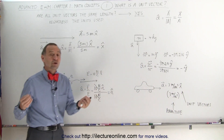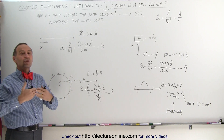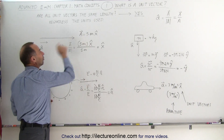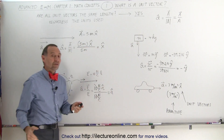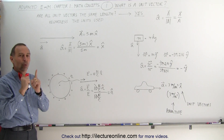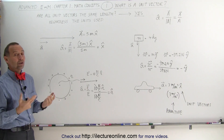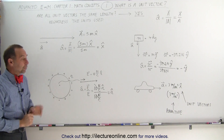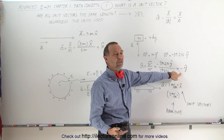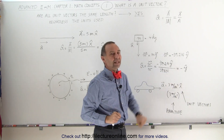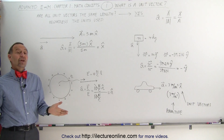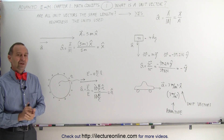Unit vectors are vectors of magnitude one that simply tell you the direction of the vector we're dealing with — whether it's the electric field, displacement, weight, or acceleration. The unit vector always gives the direction and has magnitude one, regardless of the units used. Note that a unit vector can have a negative quantity if it points in a negative direction; the magnitude is still 1, but it can be negative. Now that we understand unit vectors, let's move on to the next concept. Thank you.